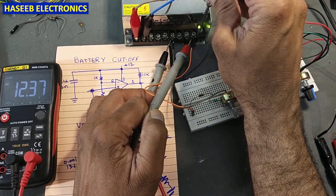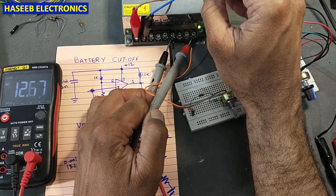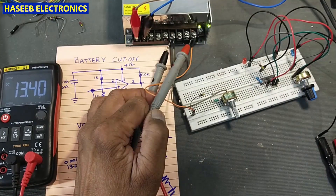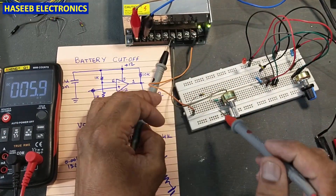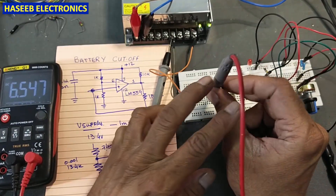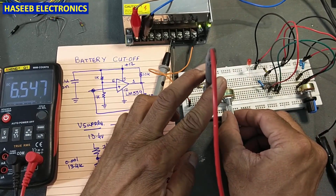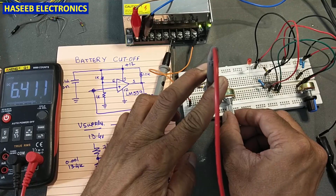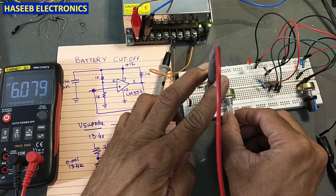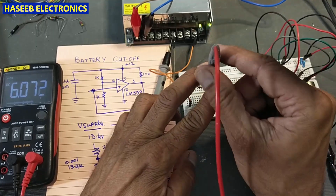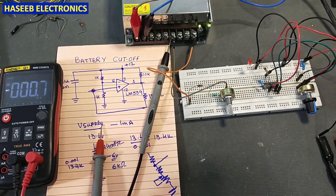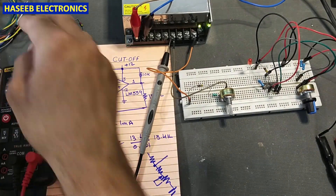Currently reading 12.4V, we will adjust the trim pot so the midpoint reads exactly 6V corresponding to 13.4V at the battery — that is our cutoff point. We measure between these two points; currently it reads 6.5V. I will adjust the trim pot so we get the exact reference voltage needed. When the battery level reaches 13.4V, this circuit will operate.